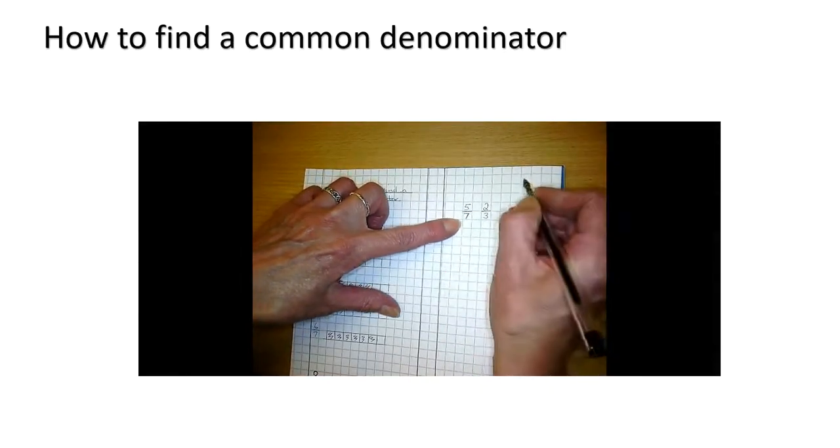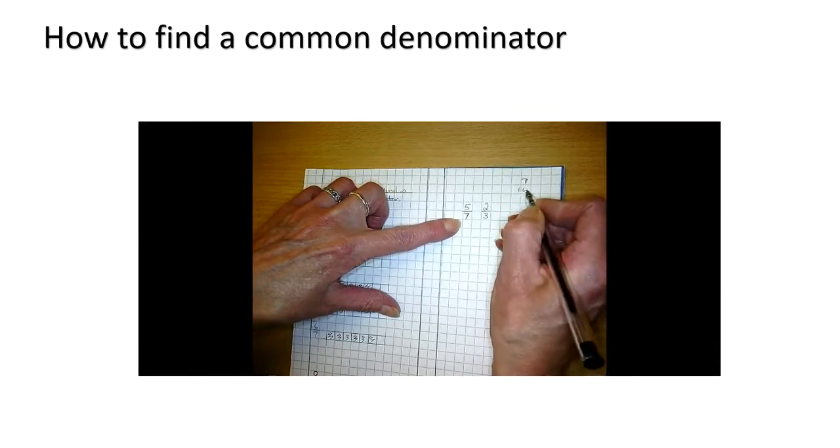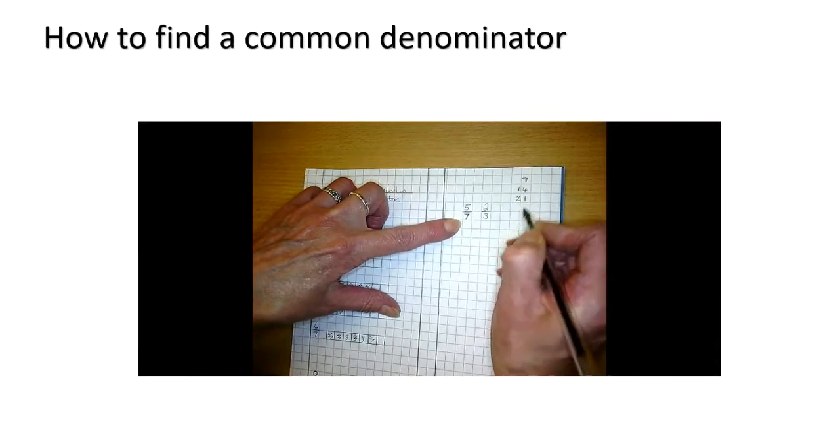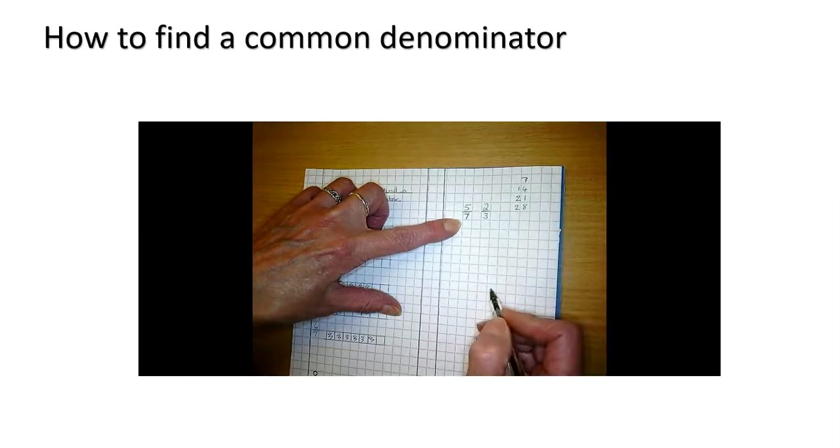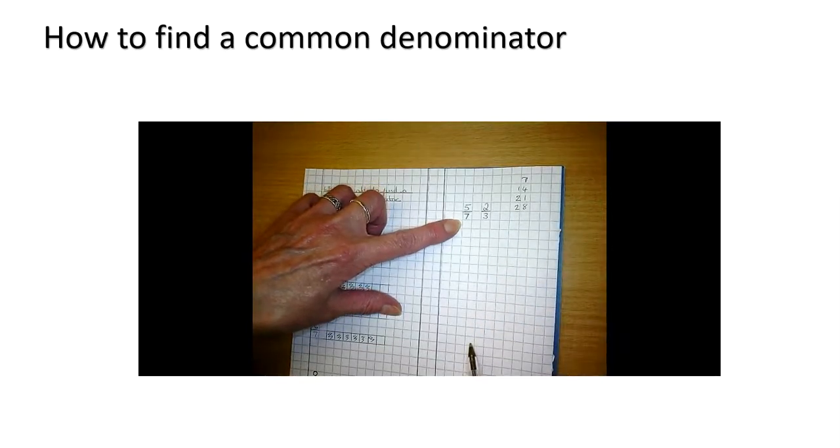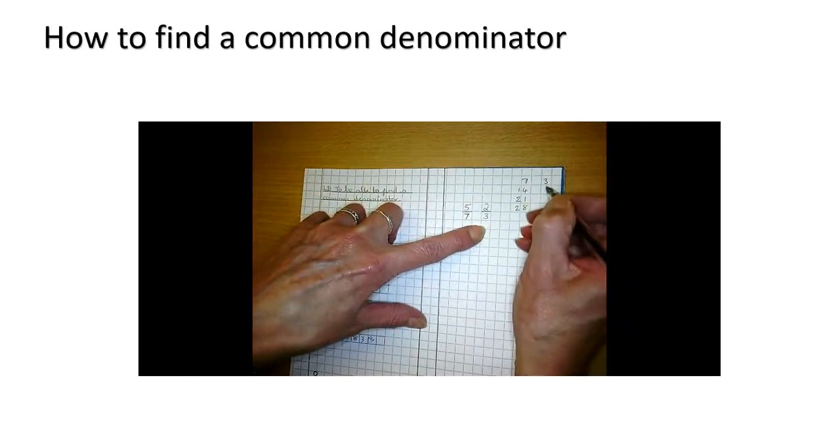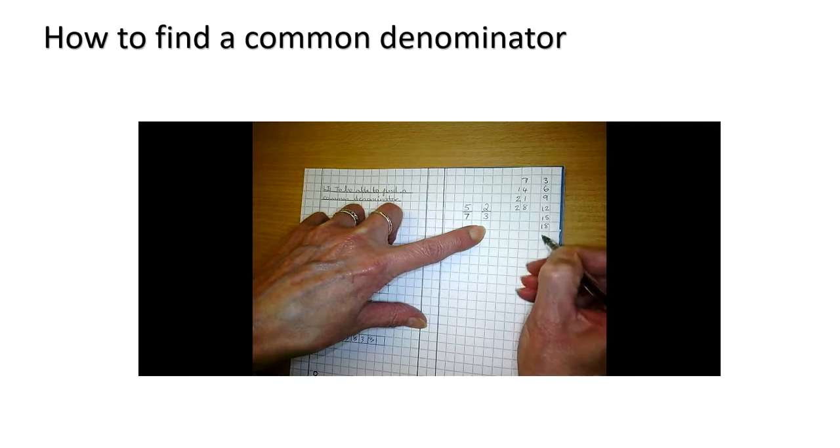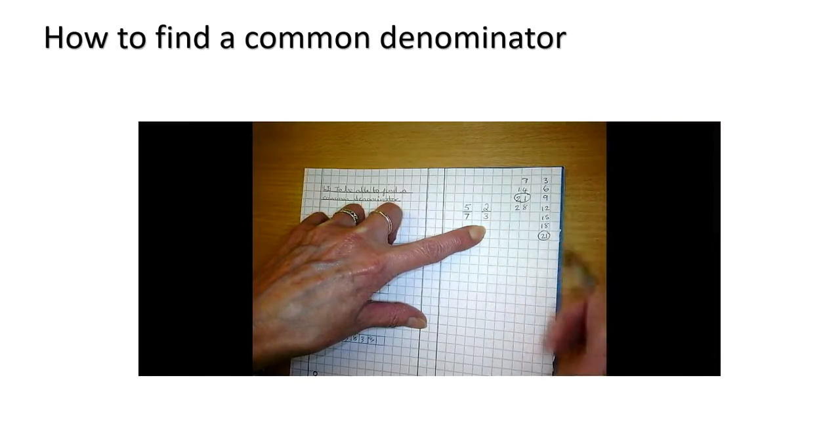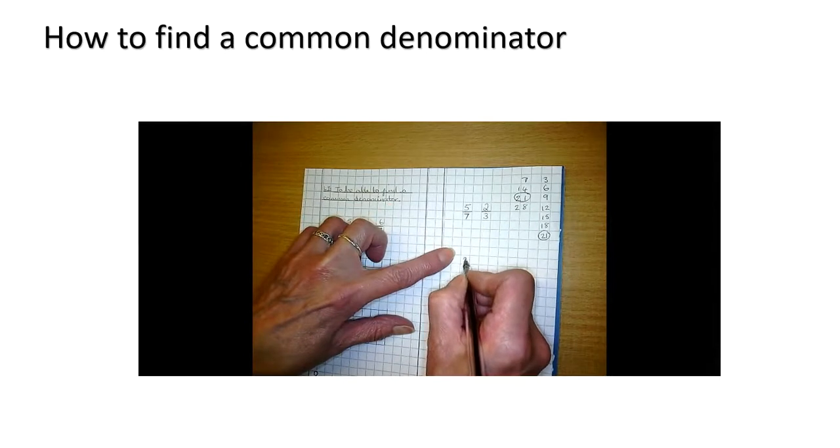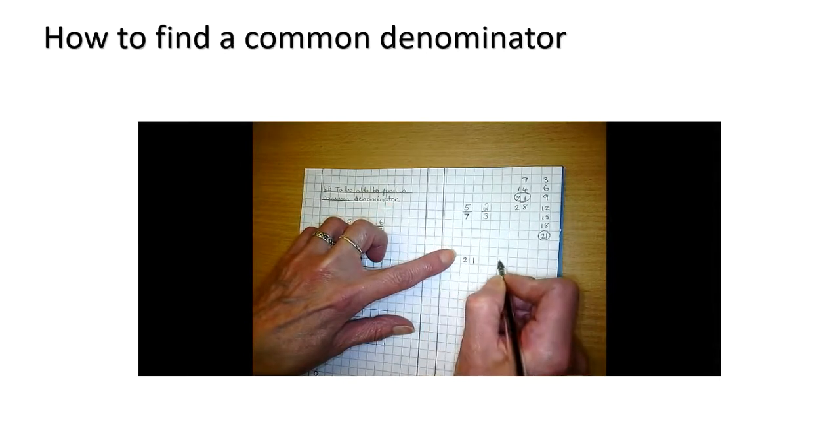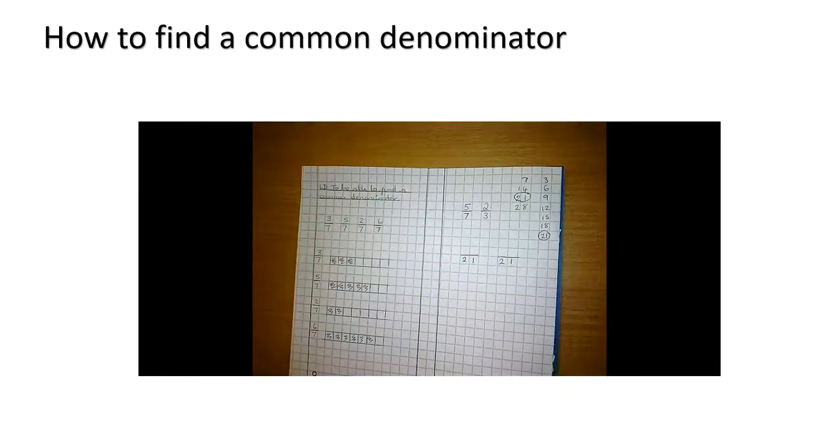So I'm going to do my 7s first. 7, 14, 21, 28. I'm going to stop there because I think I will probably not need to do any more. Now my 3 times table. 3, 6, 9, 12, 15, 18, 21. Aha! I have found a common multiple. It's 21. So now I'm going to put both of these fractions over 21. I've found a common, both the same, denominator.